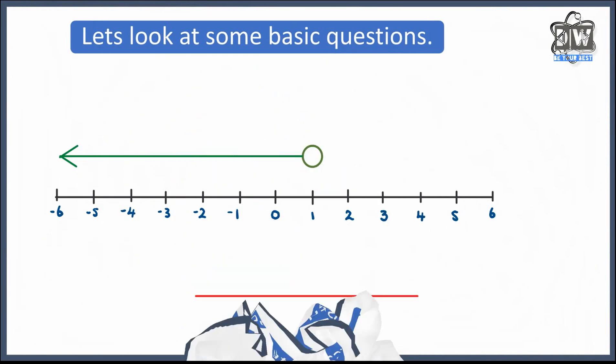Let's go over another one. Have a think about this and see if you can work out the answer before I tell you. So we're going to have x, and on this occasion x is somewhere below, so x is going to be smaller than 1. Remember, if this circle was shaded in it would be smaller than or equal to 1.